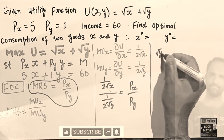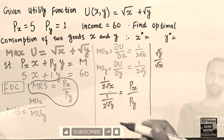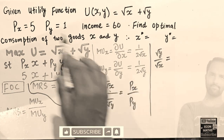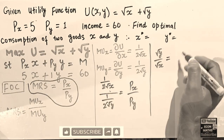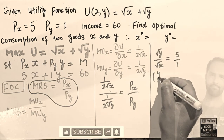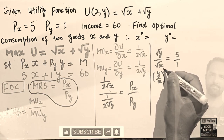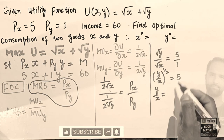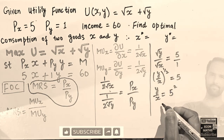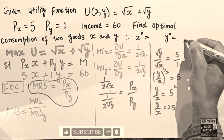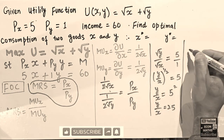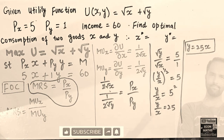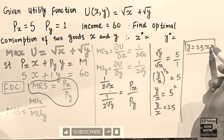We are left with √y / √x = 5/1. Transposing and reciprocating, we get y/x = 5², which means y/x = 25, so y = 25x.